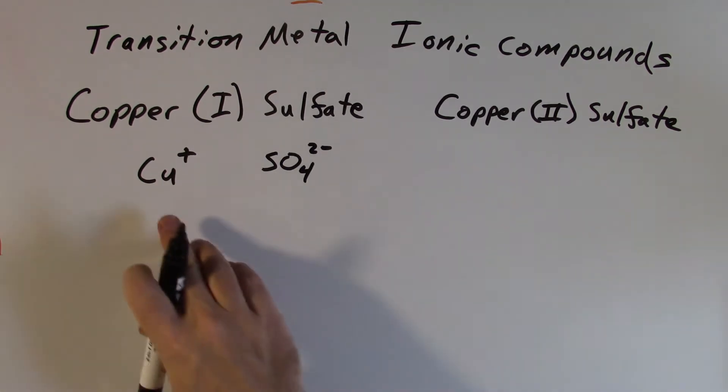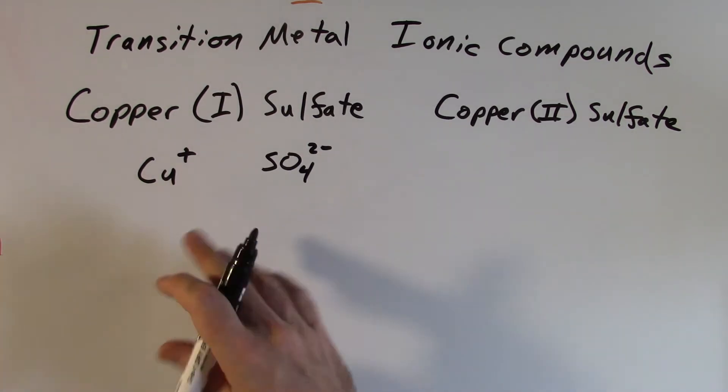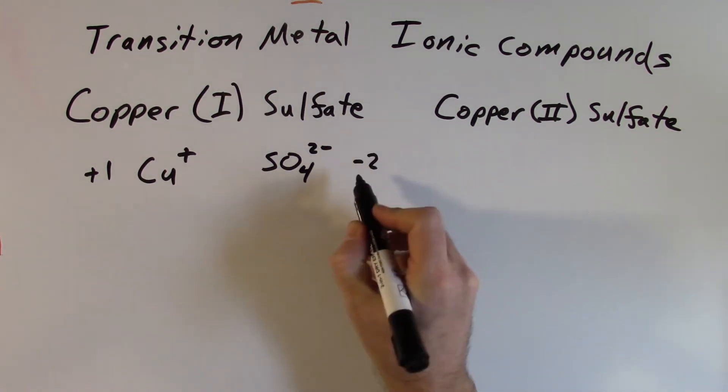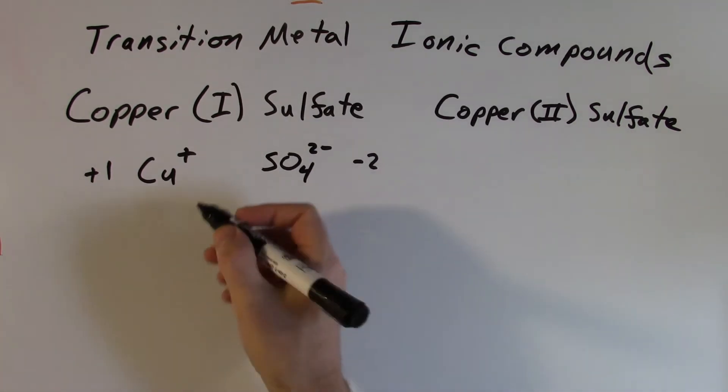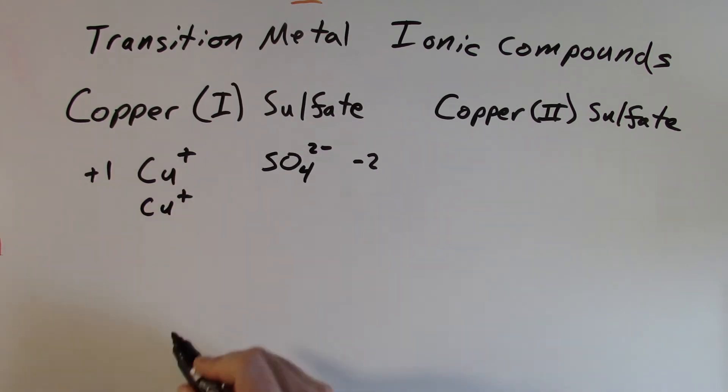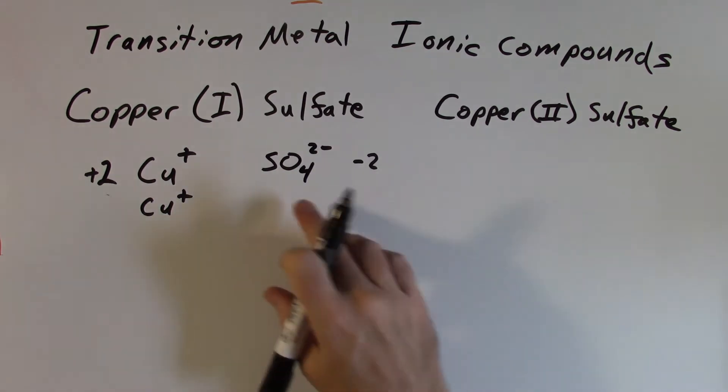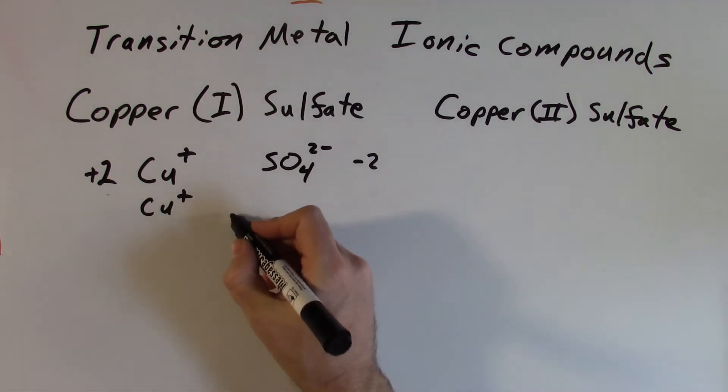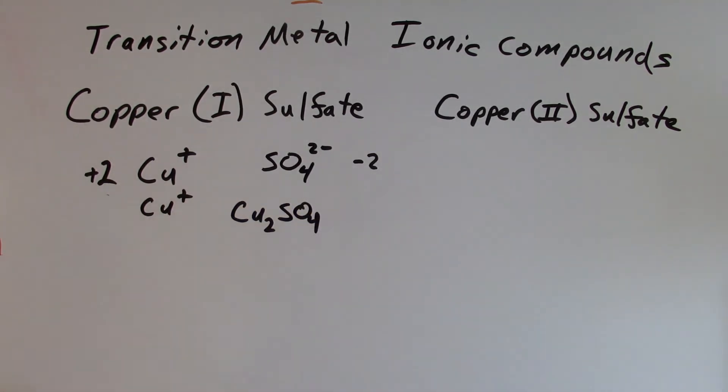So when we write out the formula for this, we want to make sure that the positive charge and the negative charge are equal to each other. Right now, I've got a plus one here from the copper and a negative two from the sulfate. So I don't have enough positive charge then for this to balance out the negative charge that I have. And so what I need to do then, I need a second copper ion in there. That's now going to give me a total of plus two. One plus one gives me a plus two to balance out the negative two charge. So how I write the formula then for this, it would be Cu2SO4. And that gives me the correct formula.